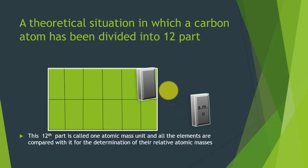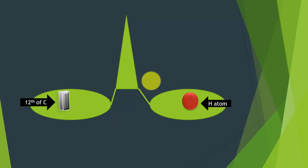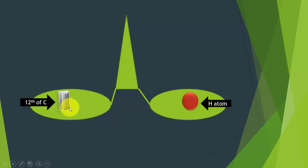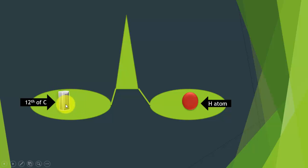So we have taken out this 12th part, and this is the weight we are going to place in one pan of the scale. In the other pan we will keep different elements to know their relative atomic masses. In this theoretical situation, on one side we have this 12th part of the carbon atom — one atomic mass unit — and on the other side we have placed a hydrogen atom. The scale is balanced, which means the weight of one atomic mass unit equals the weight of one hydrogen atom.